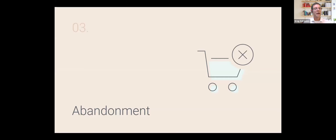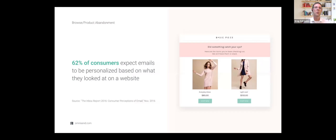Now we want to drive them further. We got the sign-ups, we're engaging with them — now let's talk about abandonment. There are two types: browse abandonment and product abandonment. From 2016, 62% of consumers already expected emails to be personalized based on what they looked at on the website, and there's no reason to believe that expectation has decreased since. Browse abandonment is still underutilized, but more retailers are adopting it because it works.